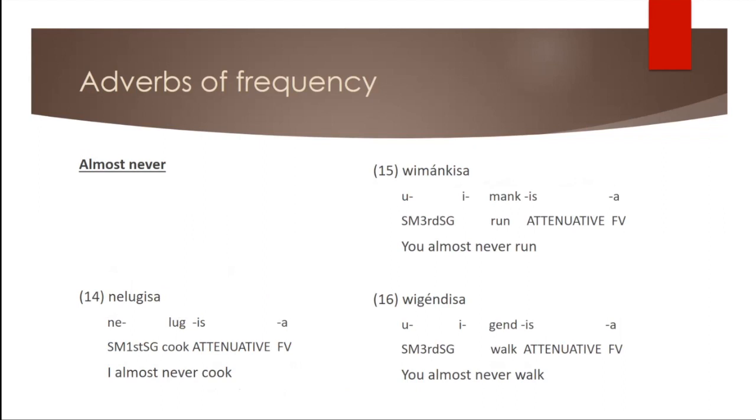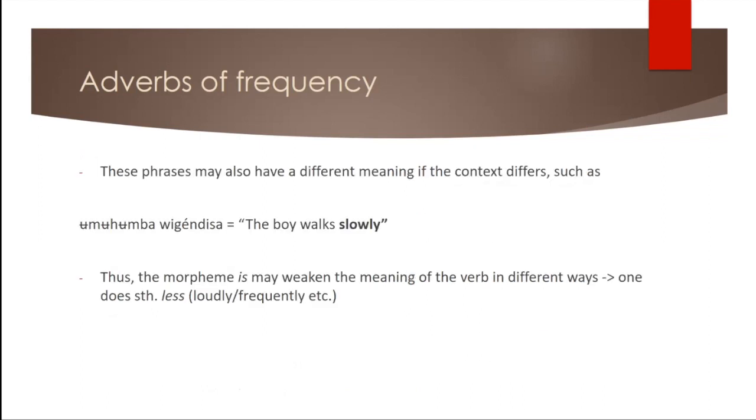But if we take that last phrase wi gendisa, this is now without context, but in a different situation, when we say huma wi gendisa, this could also mean the boy walks slowly. So 'is' appears to just attenuate the meaning of the verb in different ways. So literally means doing something less, less loudly, less frequently, less something.